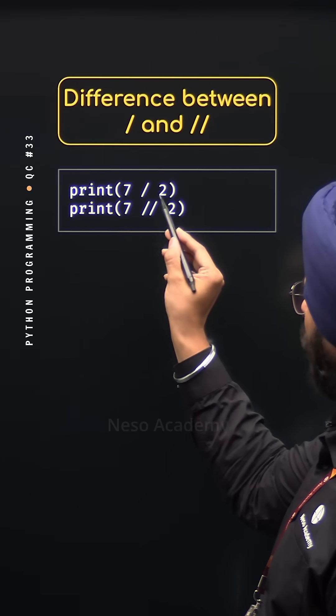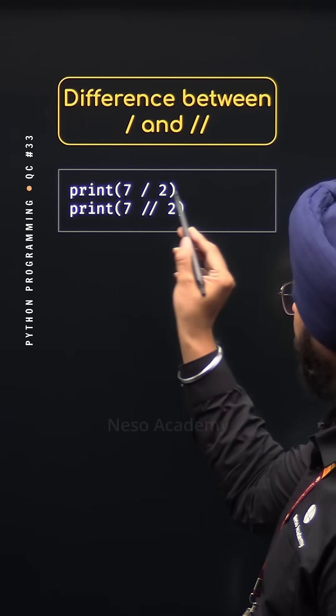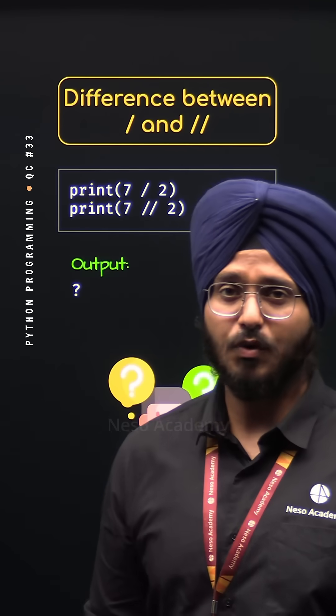Here I'm trying to print the result of normal division and floor division of 7 and 2. What do you think? What is the output of this program?